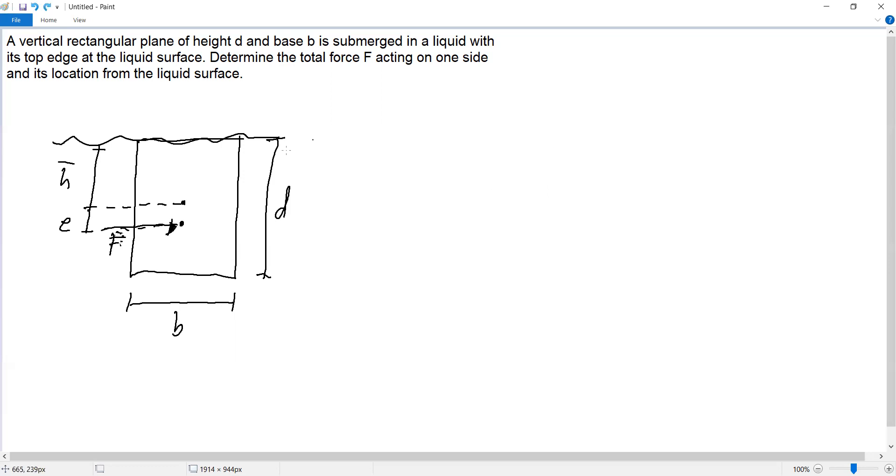Okay, so let's solve. First, solve for the force. The formula is F equals gamma, the unit weight of the liquid, times h bar times the area, the cross-sectional area. Since this is a rectangle and the top is at the liquid surface, h bar is just half. So F equals gamma times h bar, which is D over 2, then times the area which is base times height, B times D.